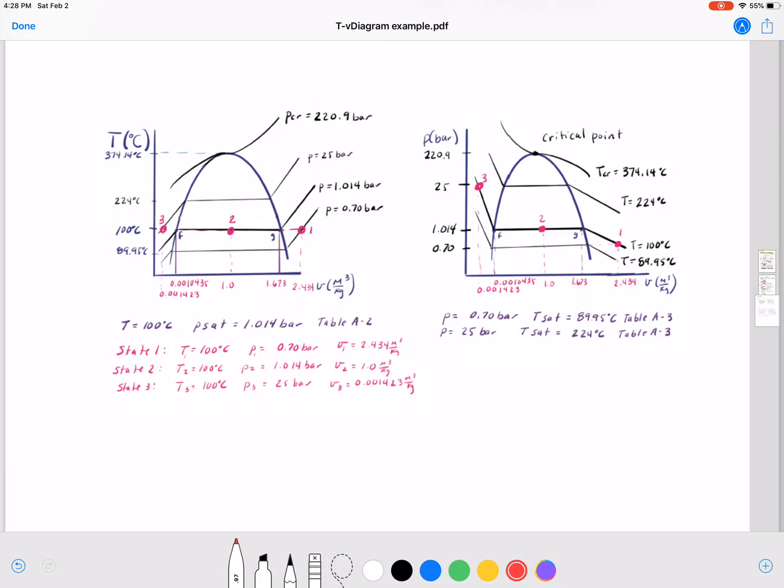So hopefully this helped understand how you get values off of the tables and a little bit about how we look at temperature specific volume or TV and PV pressure volume diagrams.